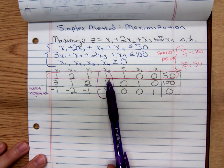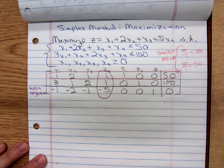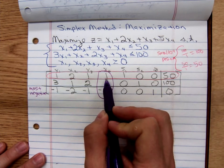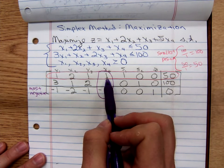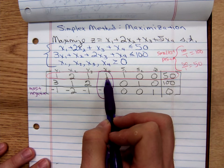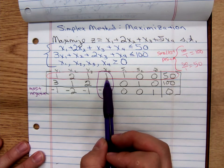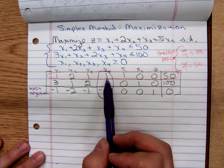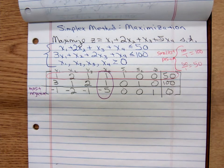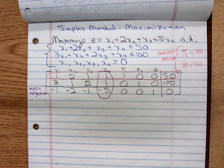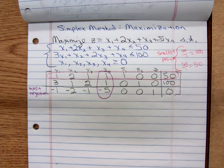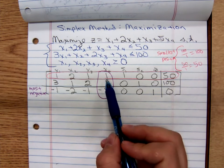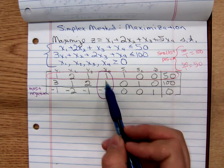So our pivot row is going to be row 1. We go to the pivot, the number that's common to both the pivot row and pivot column. We need that number to be a 1. And fortunately for us, it's already a 1. So that's saving us from having to divide to turn that number into 1.